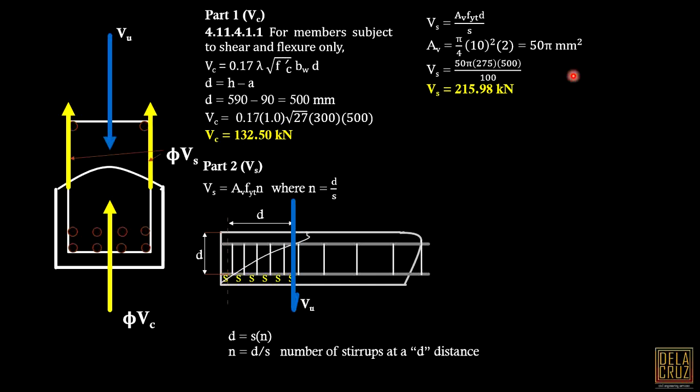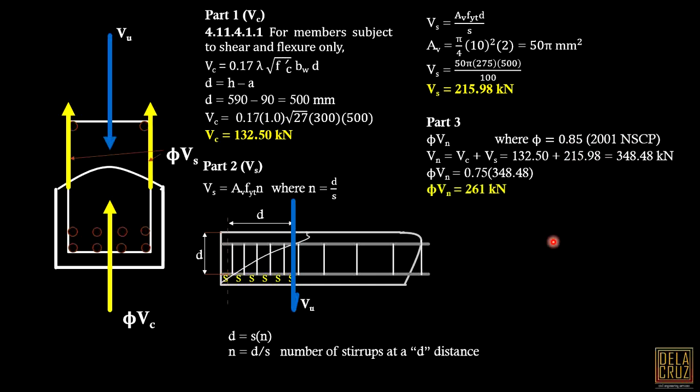For part 3, we're finding the design shear strength. Design means there's a reduction factor phi, where phi is 0.75 - sorry I didn't edit, it should be 0.75, please correct that. VN is VC plus VS. Then phi VN is the design shear strength of the beam, which is 0.75 - please correct this, it should be 0.75 for 2010. That will be the answer, the design shear strength.